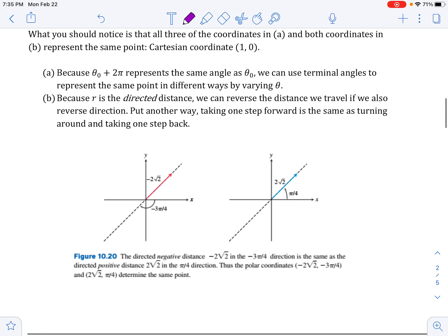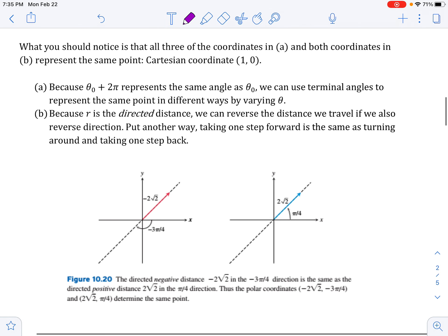What you want to notice about all of those is all of them give the same Cartesian coordinate. They all give the same location on a graph on a rectangular grid of one zero. And so any theta where you add two pi is going to be the same angle as theta. And so terminal angles are going to represent different ways. And because r is the directed distance, not just the distance, but directed distance, we can reverse the distance we travel if we reverse the direction.